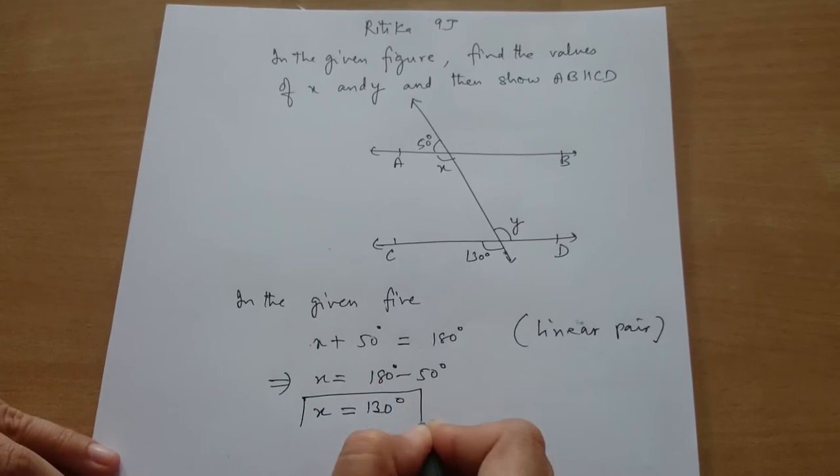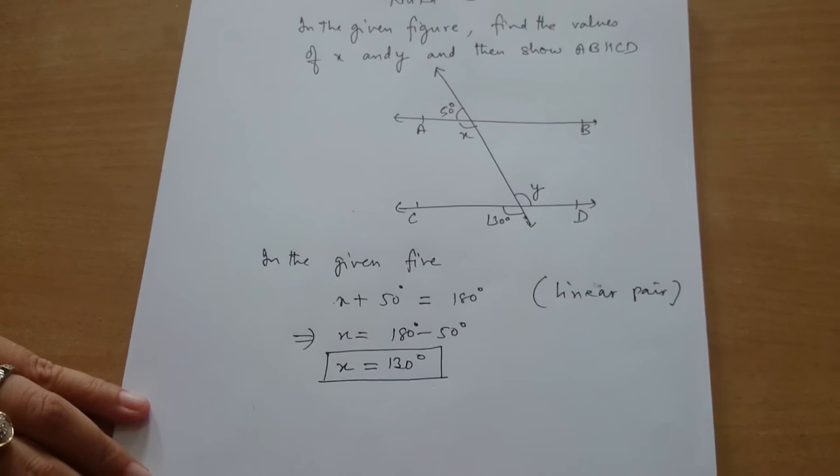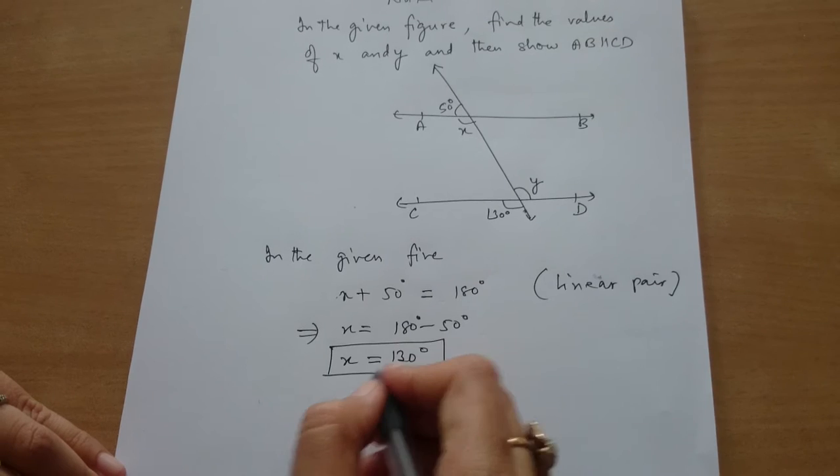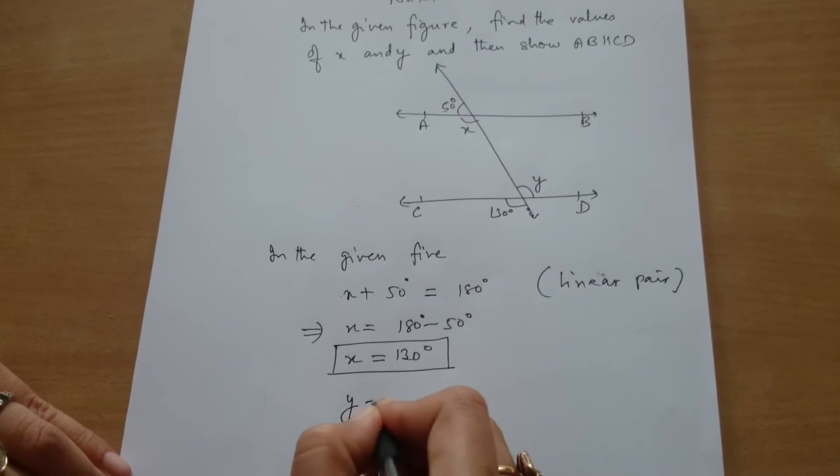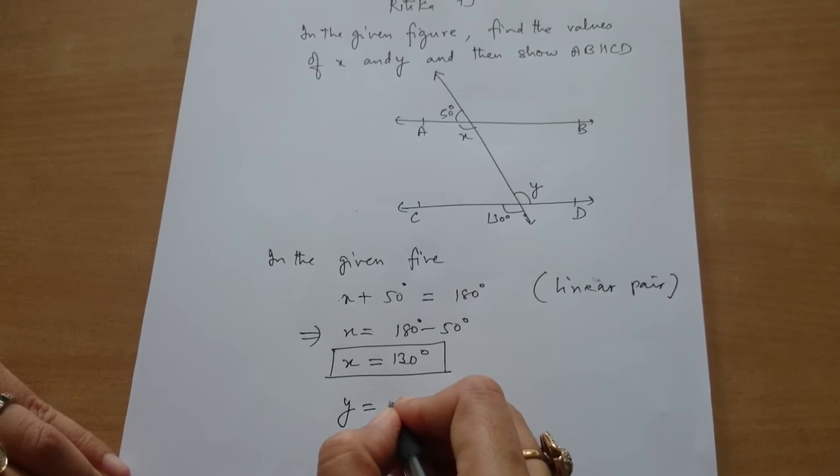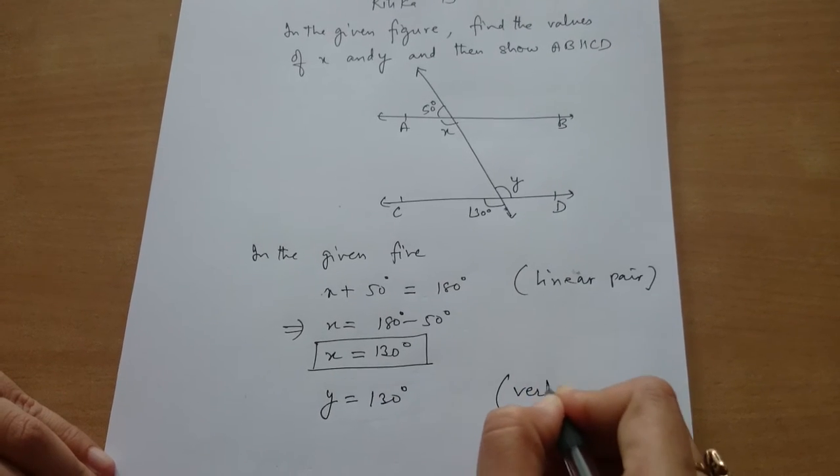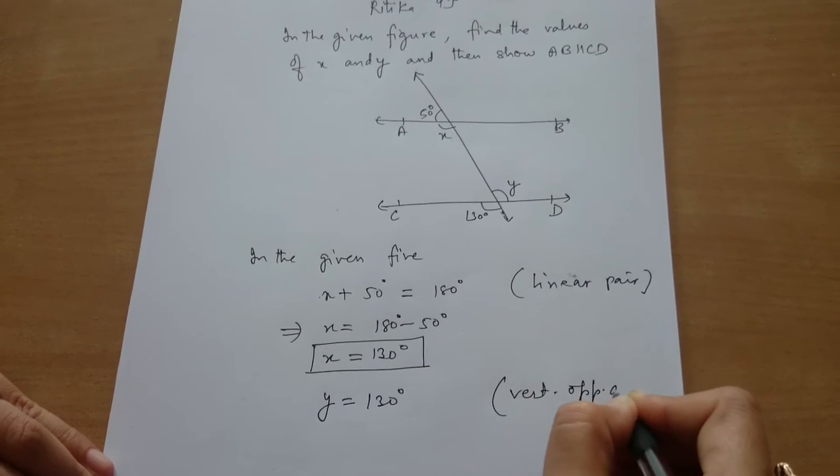So X comes out to be 130 degrees. To find angle Y, angle Y is equal to 130 degrees using vertically opposite angles.